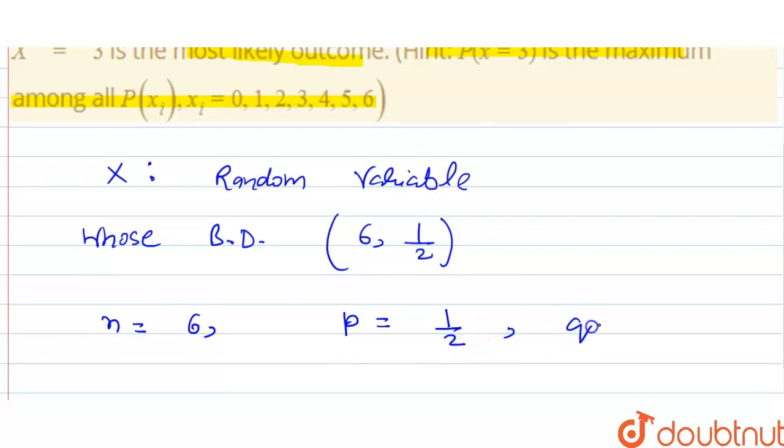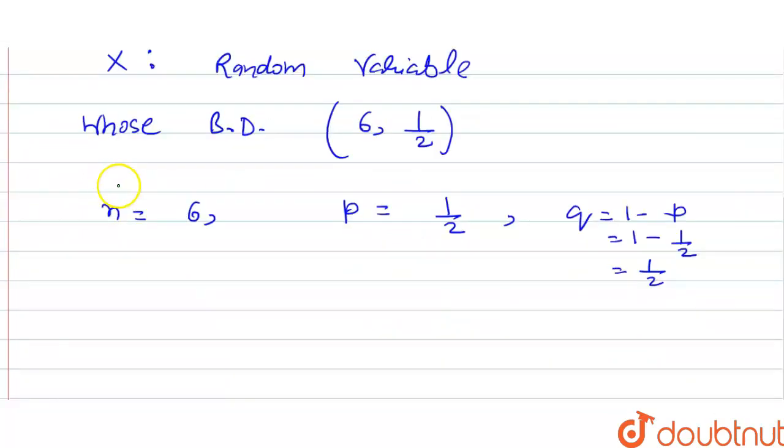n equals 6 and p equals 1/2. Then q equals 1 minus p. The value of p will be 1/2, then we got the value is also 1/2. Now, P(X=x), that is binomial distribution, follows as nCx times q to the power (n minus x) times p to the power x.